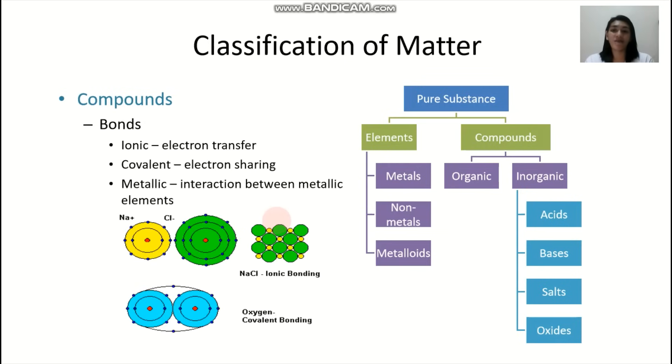Other common compounds, you have H2O or your water. So compounds can be classified according to their bonds. It could be ionic, covalent, or metallic. Again, this would be separately discussed in another chapter. But for ionic compounds, the bonding is actually by electron transfer. For covalent compounds, you have electrons sharing. And then for metallic compounds, you have the interaction between metallic elements.